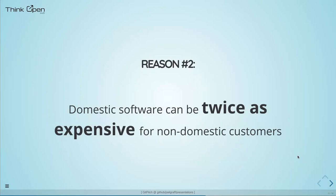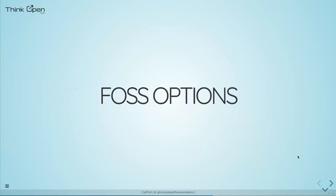The second reason: domestic software can be two to three times more expensive for non-domestic customers. If you don't live in the US and want US engineering software, it might be $20,000 here and $60,000 elsewhere. If you live outside the US, why spend that kind of money if you can find an open source project that does what you need just as well?